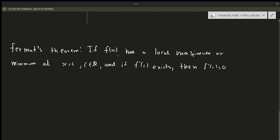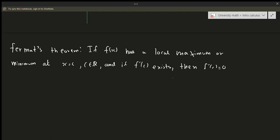Be careful: the opposite is not true. If f(x) has a local max or min then f'(c) = 0, but you can't say that if the derivative is zero at a point there's necessarily a local max or min. The converse is not true — f'(c) = 0 does not imply a local maximum or minimum.